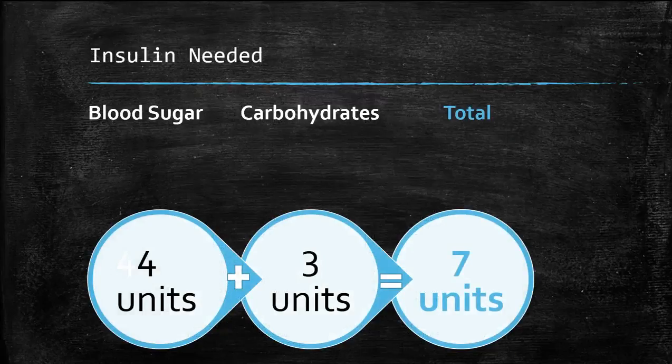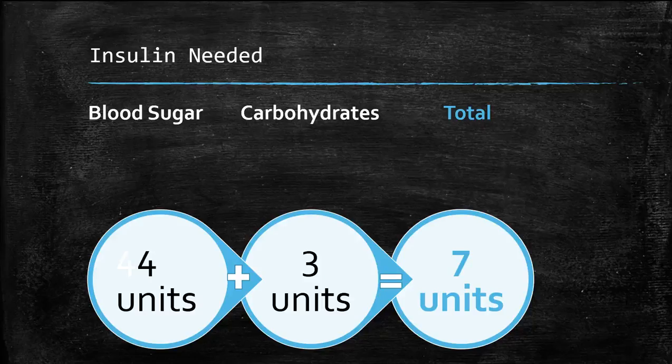In total, before breakfast, you'll need 7 units: 4 units for blood sugar correction and 3 units to cover the carbs in breakfast.